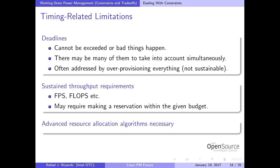There are timing constraints where power management can get in the way. Sometimes power management is actually required because of thermal or power supply constraints — you can't run too fast. But at the same time you may need to meet deadlines or throughput requirements. This requires scheduling and resource allocation to take power management into account. That is not done today but will have to be done going forward.